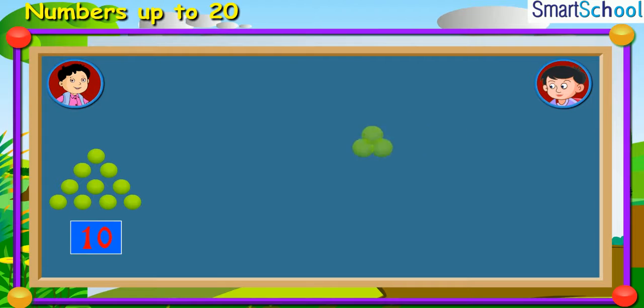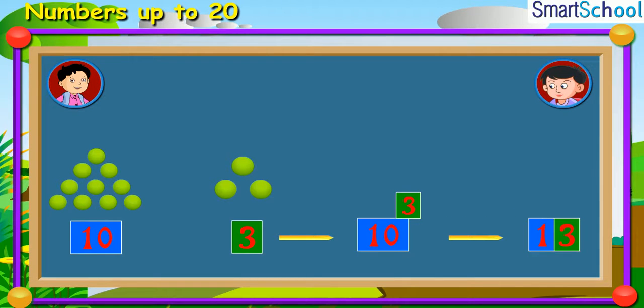If Manoj gives him 3 balls, he has 1, 3, that is, 13 balls. If Manoj gives him 4 balls, he has 1, 4, that is, 14 balls.